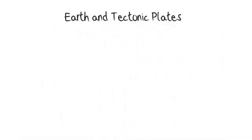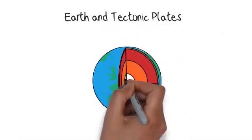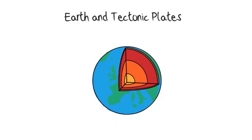Earth and tectonic plates. Our planet Earth is divided up into four layers: the inner core, outer core, mantle and crust.